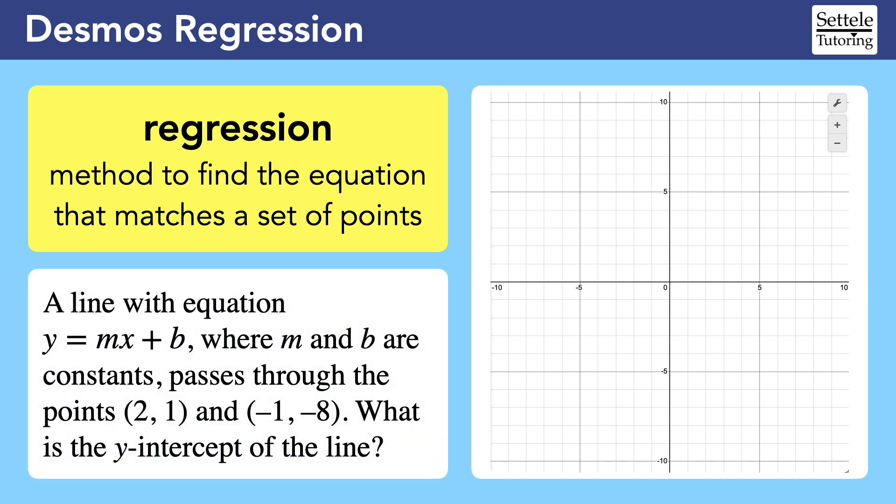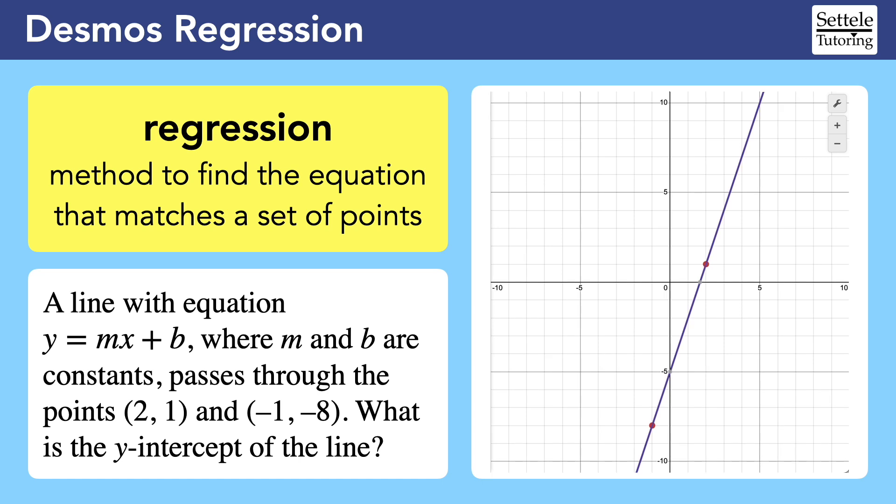Here's an example of a question that could be solved using a regression. Notice that we are given two points and the outline of an equation with some unknown constants. We can use a regression to plot the points on the xy-plane, and then we can tell Desmos to find the line that passes through those points.